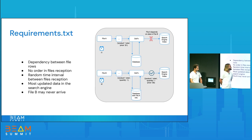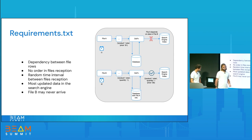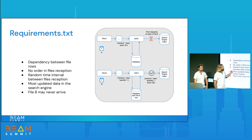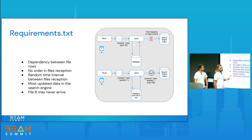Let's highlight this dependency constraint with an example. In this graph, we see that file A depends on file B and cannot be sent without file B's information. Once file B is received, both pieces of information from file A and file B can be sent to the search engine index. File A contains the product and file B contains the price of that product.